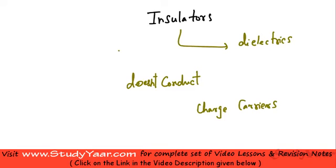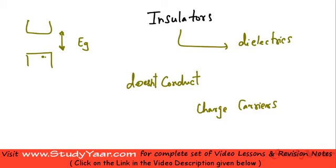Insulators are characterized by a high band gap, or large band gap. Because of this large band gap, electrons do not have sufficient energy to go from the valence band to the conduction band.